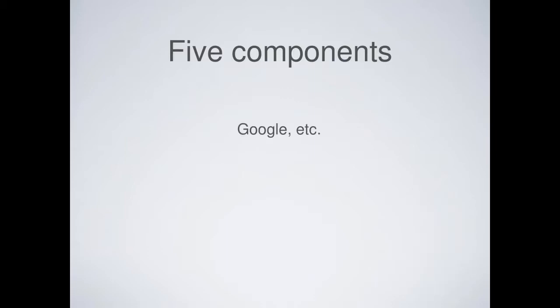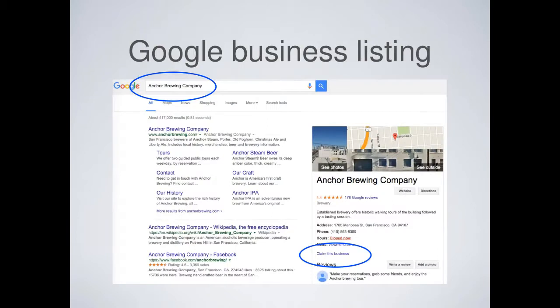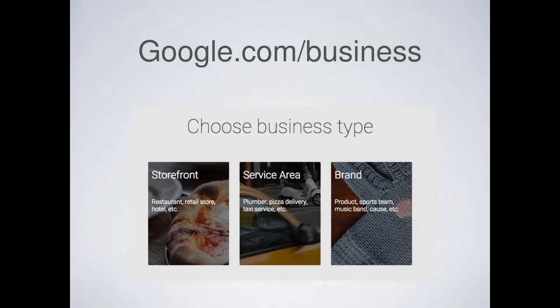Starting with Google: your Google business listing is very important. You can search for your business name on Google, and on the right side in the knowledge panel there's a link that says Claim This Business. You can click on that if Google already knows about your business. If not, or if it's a brand new business, you can go to google.com/business. These links are all in the resource list.